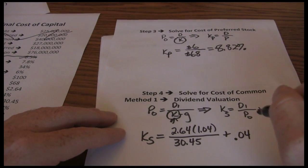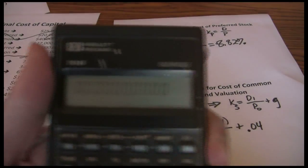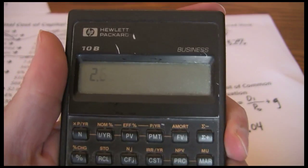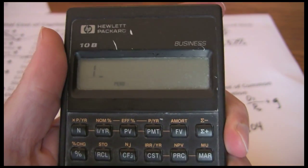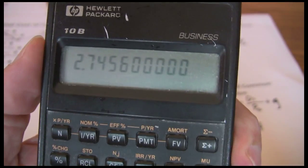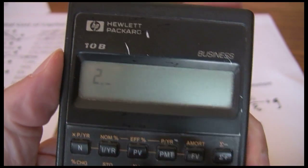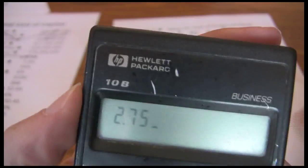Now we can go through and solve for this. $2.64 times 1.04 gives us a dividend of approximately $2.75. I'm just going to round that off and make it $2.75 for our D1.